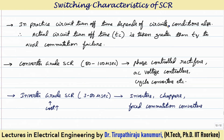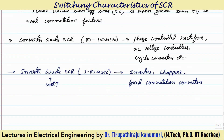In practice, the circuit turn-off time TC is taken greater than the rated TQ mentioned in the nameplate, to avoid commutation failure and account for any effects from the power circuit. SCRs are classified into two categories: converter grade SCR (circuit turn-off time 50–100 microseconds, used for phase-controlled rectifiers, low-frequency AC voltage controllers and cycloconverters, lower cost) and inverter grade SCR (very fast turn-off time, used for inverters, choppers and forced commutator converters where higher switching frequency is required, though more costly).